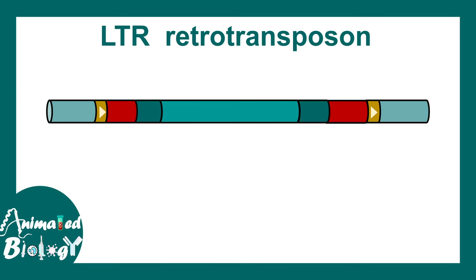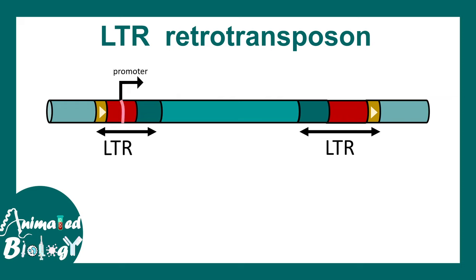Let's talk about the LTR retrotransposon first. The LTR retrotransposon has long terminal repeats (LTRs) on both sides. Inside the left LTR there is a promoter sequence where transcription can start, and there is also a coding region that gives rise to integrase and other enzymes necessary for the transposition reaction.